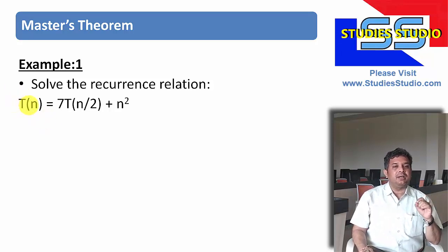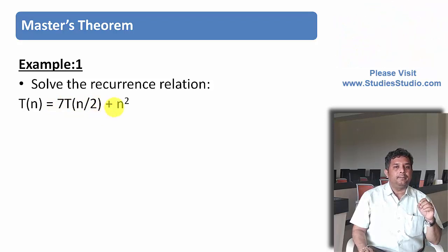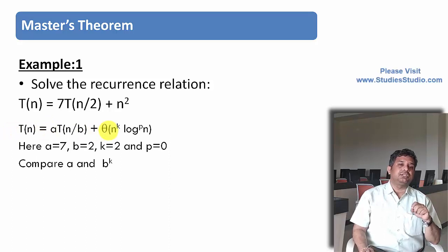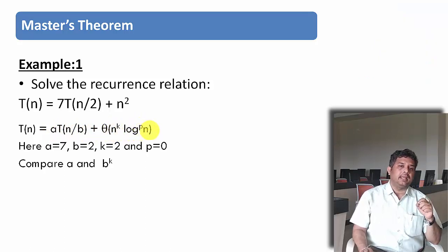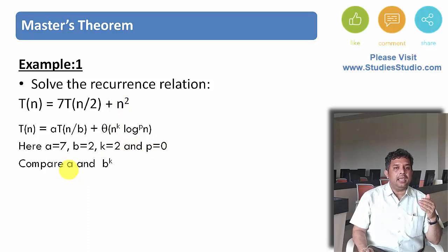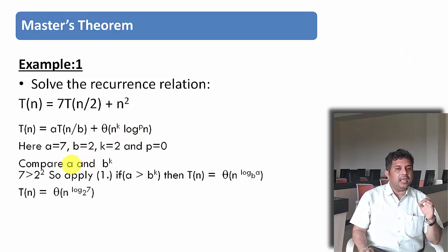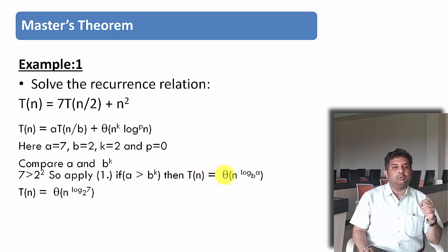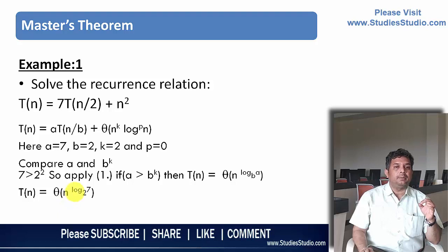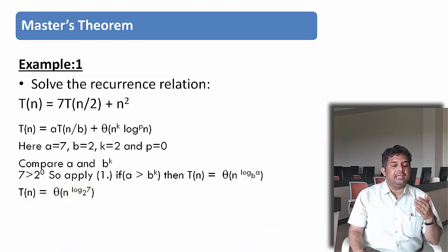The recurrence relation given to us is T(n) = 7T(n/2) + n². We will take the recurrence relation from Master's Theorem — T(n) = a·T(n/b) + Θ(n^k · log^p n) — and compare. Here, a = 7, b = 2, k = 2, and p = 0. Now we compare a and b^k: 7 is greater than 2² = 4, so we apply the first formula where a > b^k. Therefore, the complexity of this function is Θ(n^(log base 2 of 7)). Very easy if you remember the formula.